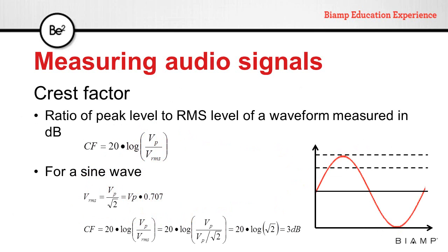In other words, even if two signals have the same peak level, one might sound louder than the other. Depending on the type of signal, we can estimate the RMS level if we know the peak level by using the crest factor. Crest factor is the ratio between the peak level and the RMS level of a wave for measuring dB, and is calculated with the equation shown on screen. For example, we know that a sine wave's RMS level is the peak level divided by the square root of 2. Substituting this in the crest factor formula, we find that the sine wave has a crest factor of 3 dB. That means that the RMS level of a sine wave is 3 dB below the peak level.